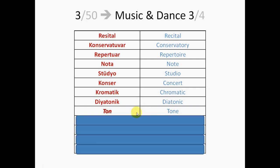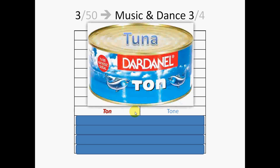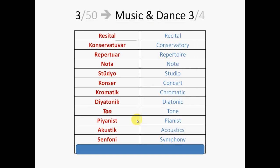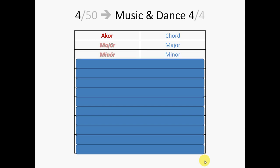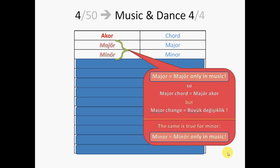Ton. Ton means ton, but it also has other meanings in Turkish. So, if you are not talking about music, it might mean tuna fish, for example. So, you should be careful about these different meanings. Pianist. Acoustic. Symphony. Concerto. Accord. Major. Minor. The words major and minor are used only in music in Turkish. So, for example, if you want to say major chord, you say major accord. But, for example, if you want to say major change, you don't say major değişiklik, you say büyük değişiklik. This is true also for minor. In Turkish, minor is used only in music.